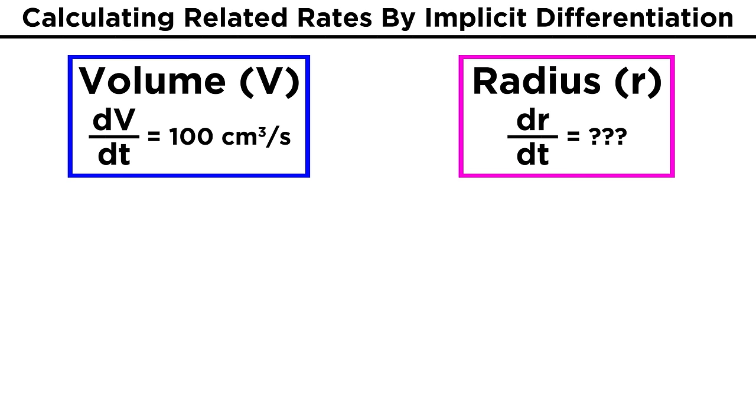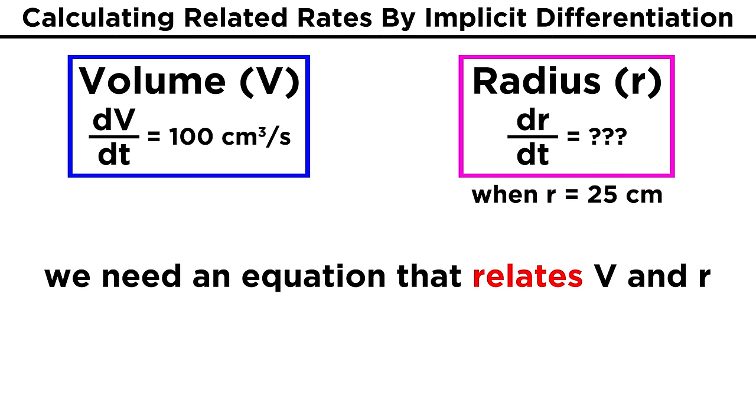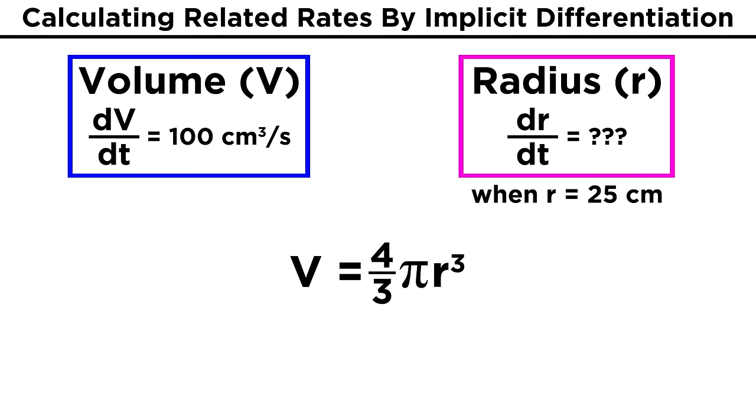But what we want to know is DR over DT, or the change in radius over time, at the moment that the radius is twenty-five centimeters, since the radius is half the diameter. To see how these values will relate, we need an equation that relates V and R, and that will be the equation for the volume of the sphere. When we learned geometry, we saw that this formula is V equals four-thirds pi R cubed.